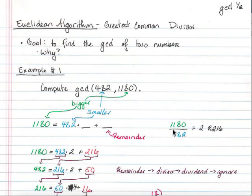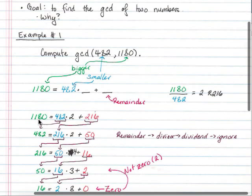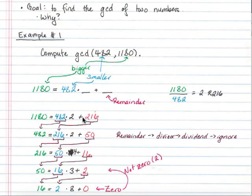Like I wrote over here, 1180 divided by 482 is 2 with a remainder of 216. So I can write this over here as 1180 equals 482 times 2 plus 216, the remainder.